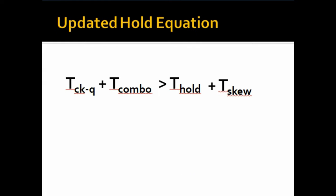So, now what will be the updated equation for hold? The updated equation for hold with skew will be: t_clk-to-Q plus t_combo should be greater than t_hold plus t_skew. If this skew is positive it is bad for hold, but if this skew is negative it is good for hold.